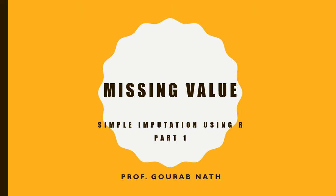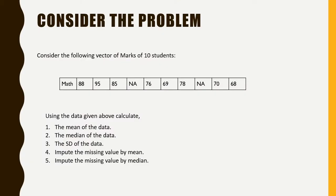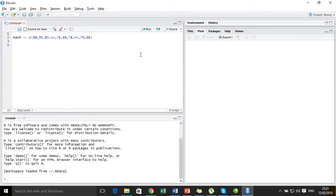Hello, in this video we are going to learn some simple missing value imputations using the R programming language. For that, consider the problem: we have a dataset of marks of 10 students in mathematics, and it happens that the dataset contains some missing values in it. So let us take this problem to R Studio.